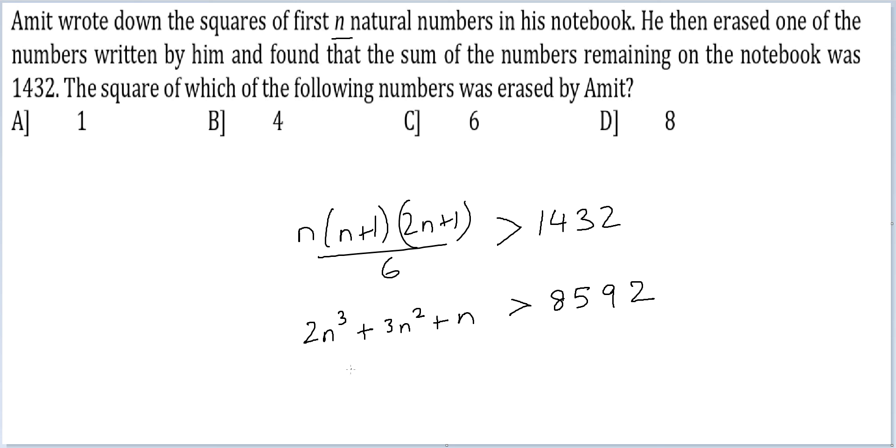Let's see what if I put 15. 15 cube is 3375. So double of this would be 6750. 2n³, 3n² is 3 into 225, so 675 plus 15. This does not exceed 8592. So 15 is not good enough for us.